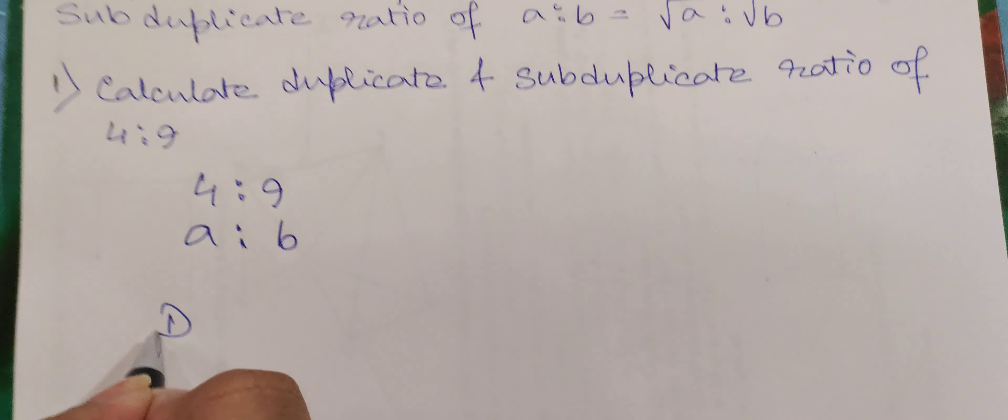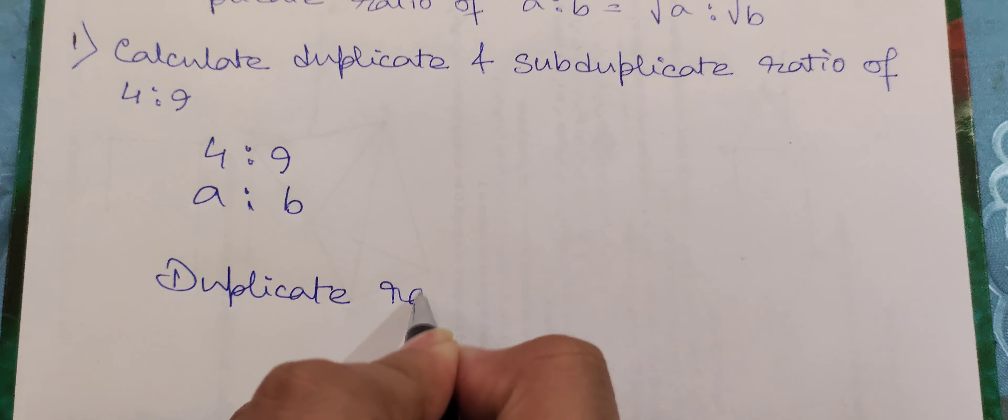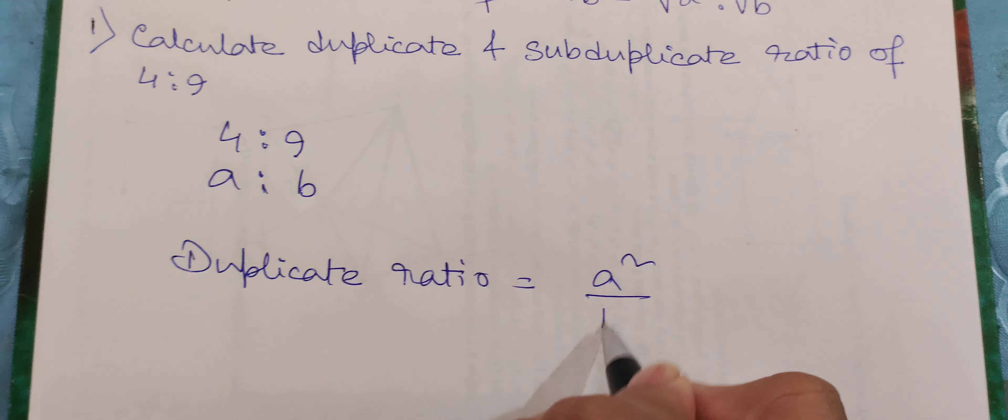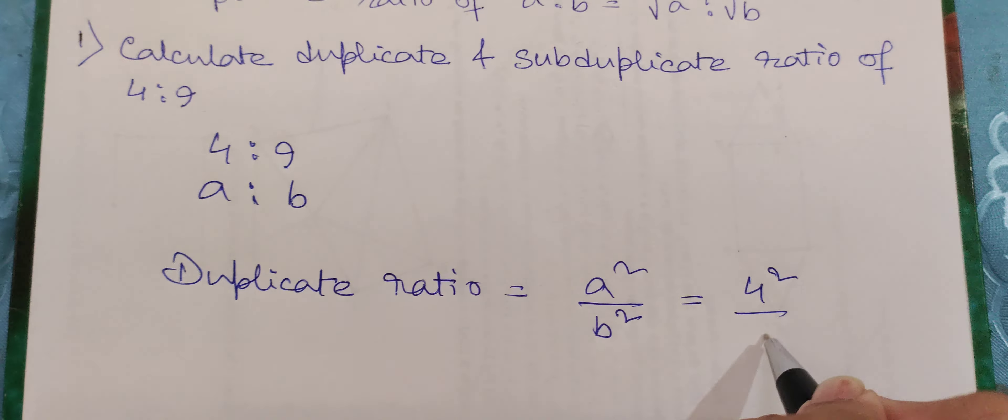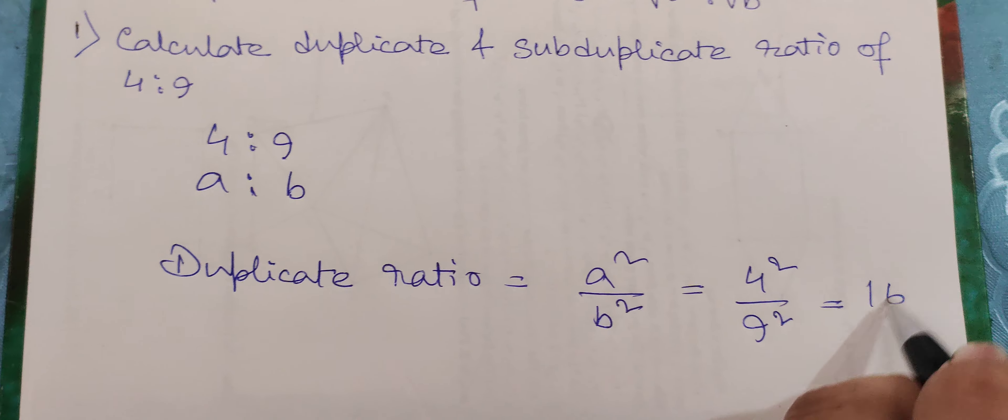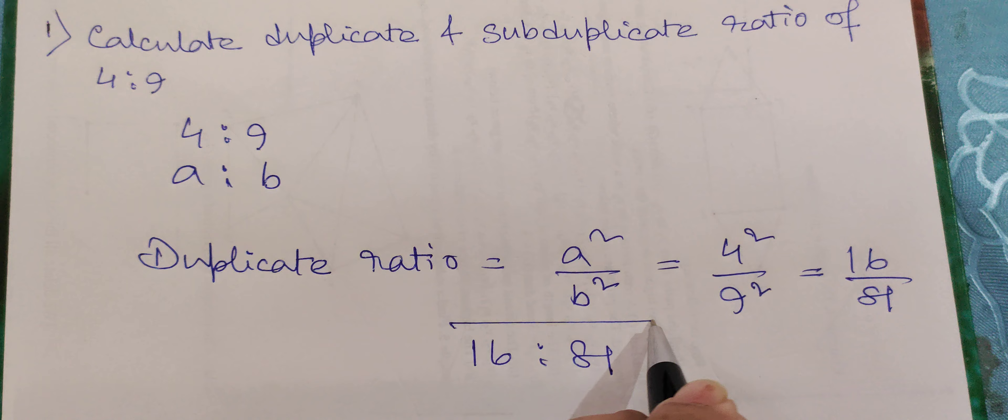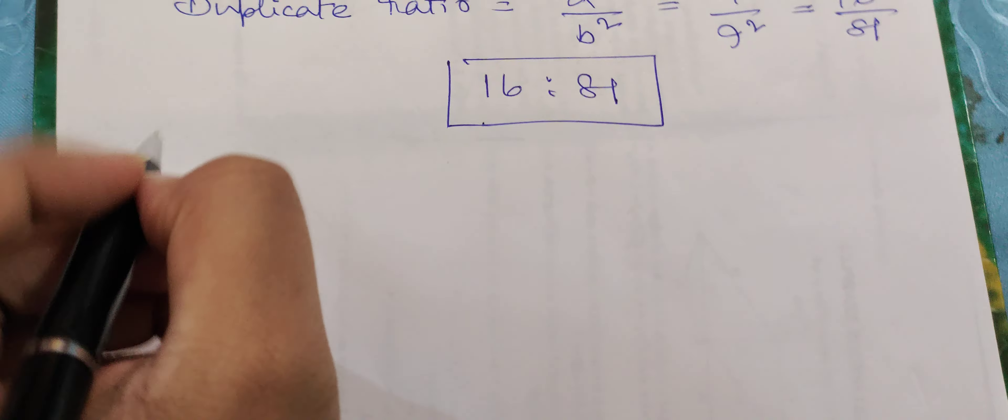So duplicate ratio will be equal to a square by b square, that means 4 square by 9 square, which equals 16 by 81. So the ratio will be 16 is to 81.